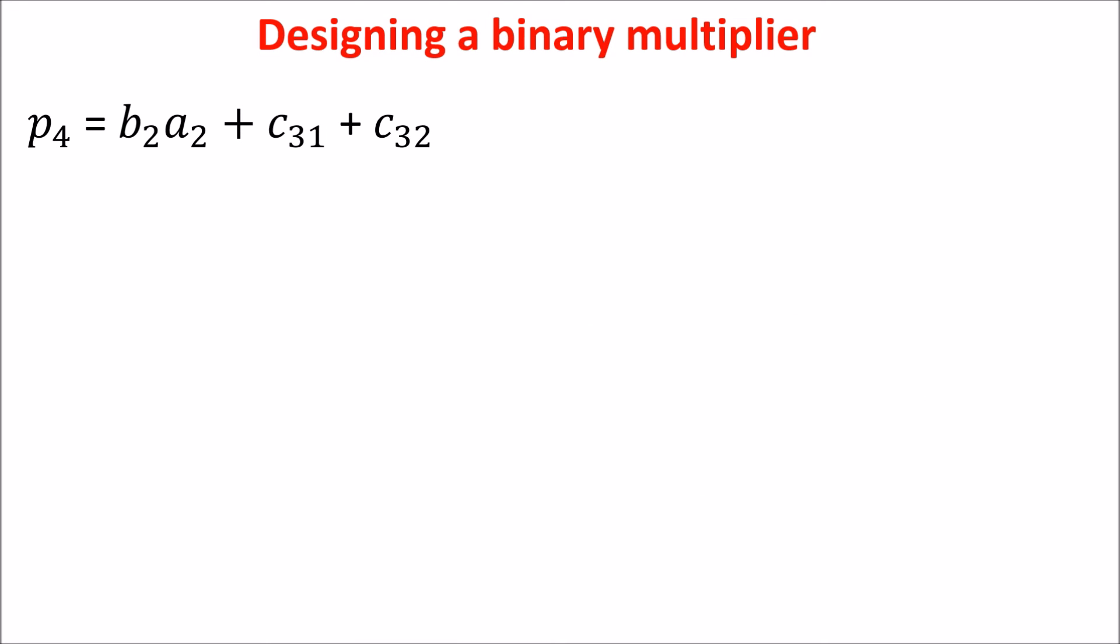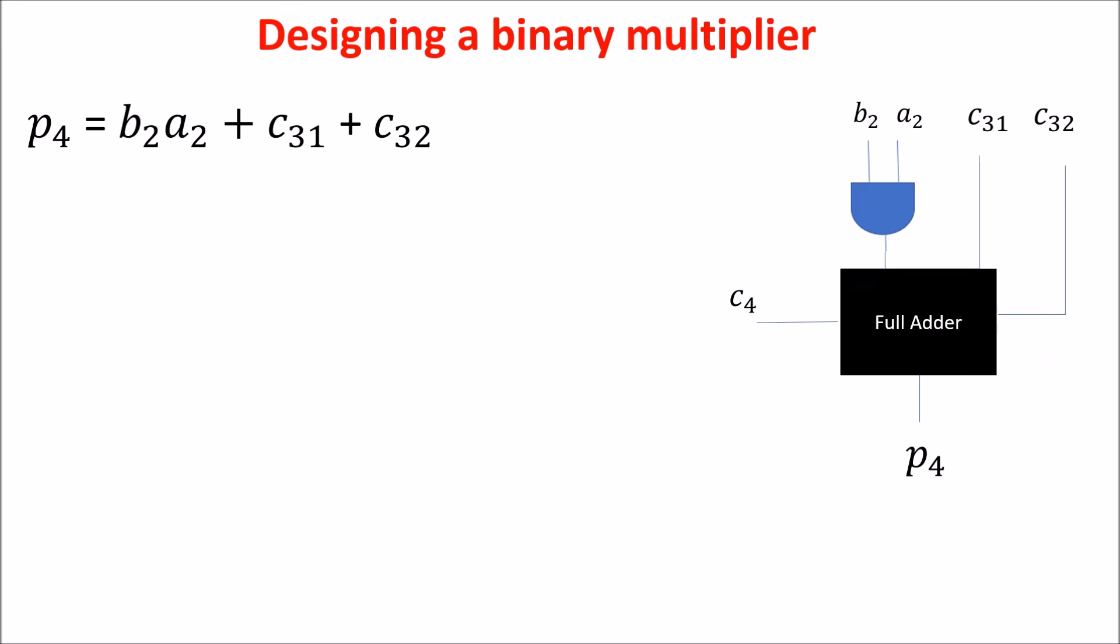P4 is composed by adding the two carriers produced in the previous stage to the only factor in the fourth stage. First, we perform the multiplication, and then we see that we have three terms to add, so we need just a full-adder producing a carry-out, which is the P5 factor of the final product.